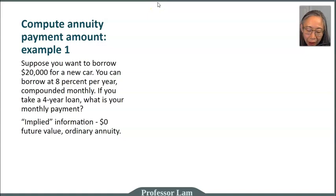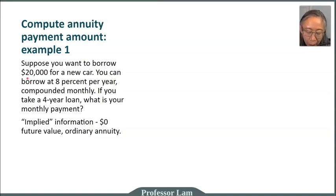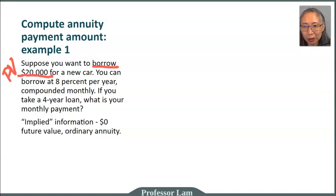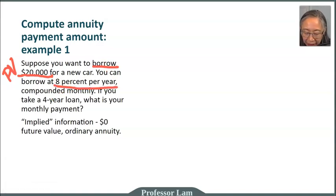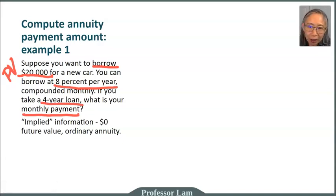Our next example involves computing the annuity amount — a very common type of consumer credit problem. You are looking at buying a new car. After a down payment, you need to borrow $20,000. Whenever you're borrowing money to buy something, the amount you borrow is the present value — the bank gives the car dealer $20,000 today. The 8% is the interest rate, this is a 4-year loan, and you're asking what is the monthly payment. The time unit is month.